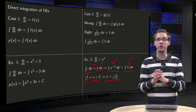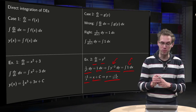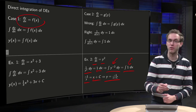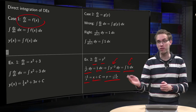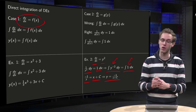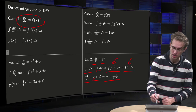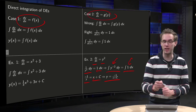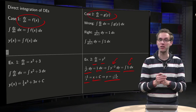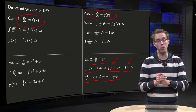Now we know how to solve two types of differential equations. First case: dy/dx equals f(x), where the right-hand side only depends on x. Second case: dy/dx equals g(y), where the right-hand side only depends on y.